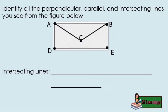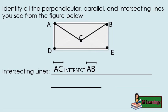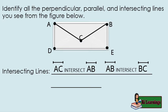What are the intersecting lines? Line segment AC intersects line segment AB. Line segment AB intersects line segment BC. Line segment AC intersects line segment BC.